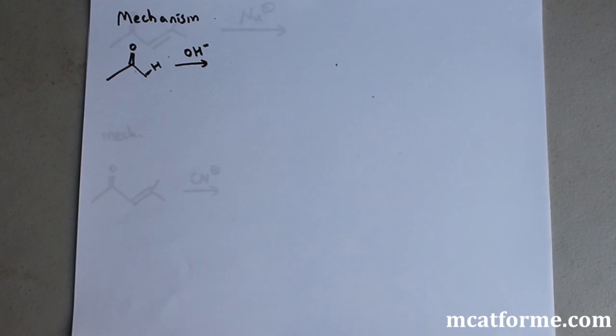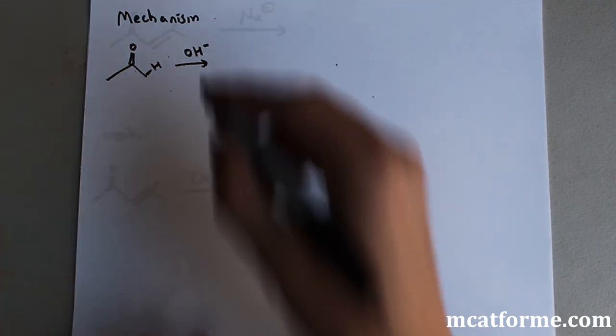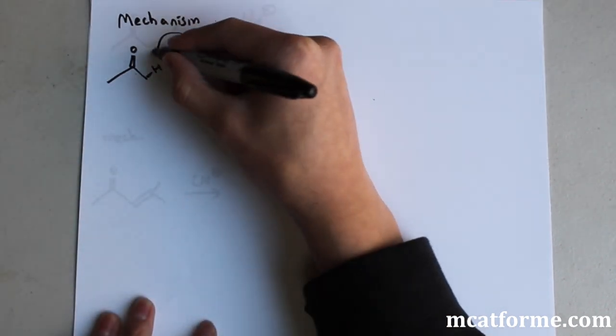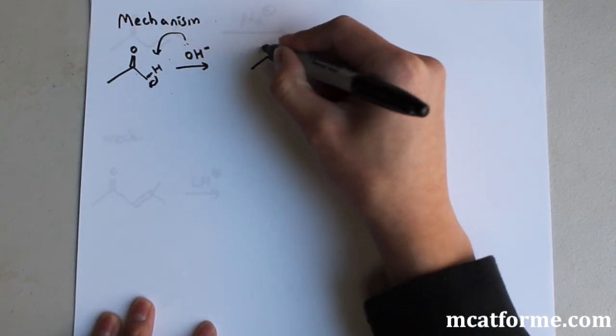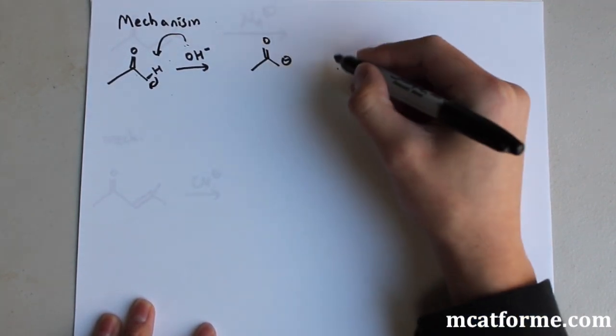Looking at the mechanism now, we start off with this acetone molecule right here, and we're reacting it with the base. So what's going to happen is we're going to make this into a negative charge.